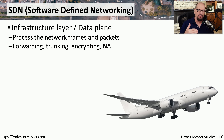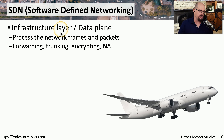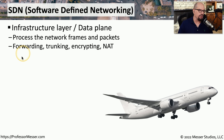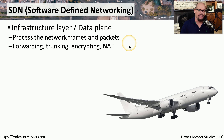We can then take these pieces and create software versions that we can run in the cloud. There are commonly three layers or three ways to separate these devices so that we can create some consistency across all of these networking components. The first layer would be the infrastructure layer, sometimes referred to as the data plane of that device. It's common that this data plane would do the forwarding, the trunking, the encrypting, the network address translation, or anything else that needs to occur at the packet level.